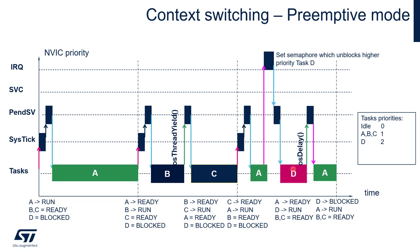Since task D has higher priority than preempted task A, the scheduler triggers PendSV to switch context to task D instead of returning to task A. Task D performs its operations quickly and sends itself to a blocked state for a given timeout using the OSDelay function. It cannot use OSThreadYield, as that would send it to the ready state and it would be selected immediately by the scheduler as it is the highest priority task. Once task D goes to the blocked state, the scheduler triggers PendSV to switch context back to task A for the remaining time slot.